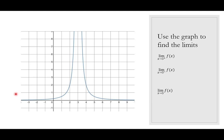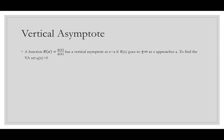For a rational function r(x) = p(x)/q(x), it has a vertical asymptote at x = a if r(x) goes to positive or negative infinity as x approaches a. To find it, we set q(x) = 0 — we look for where the denominator equals zero.